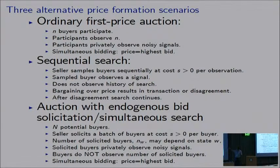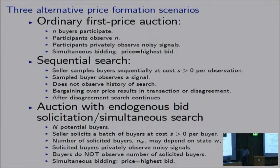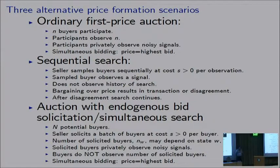The third scenario is an auction with endogenous bid solicitation, or simultaneous search. Here there are N potential buyers. The seller solicits a batch of buyers at cost S per buyer. The number of solicited buyers is N_W, which may depend on the state since the seller is informed. Solicited buyers privately observe noisy signals from the same technology but do not observe the number of solicited buyers. They bid simultaneously and the price is the highest bid. This is a hybrid environment combining elements of the auction with elements of the search.